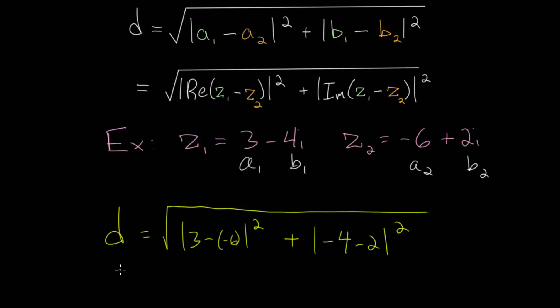So let's now simplify everything. We have that D, the distance between these two complex numbers, is the square root of this expression. And we have 3 plus 6, which is 9. And when taking the absolute value of a positive number, it remains positive, so we will square that. And over here, we have minus 4 minus 2, which is negative 6. And the absolute value will make it positive 6, and we will square that.